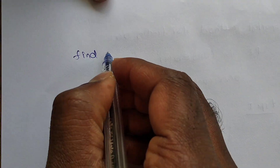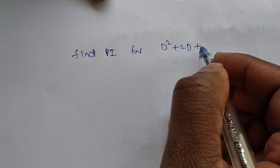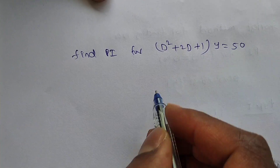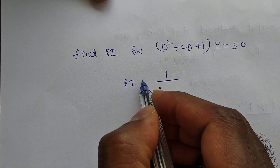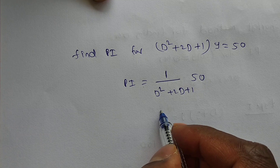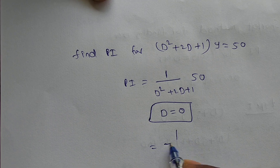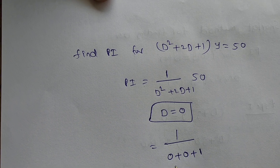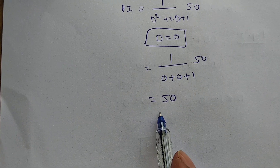Next problem: find PI for (D²+2D+1)·y = 50. PI = 1/(D²+2D+1) · 50. Since 50 is a constant, we replace D = 0: 1/(0+0+1) · 50 = 50. So the particular integral is 50.